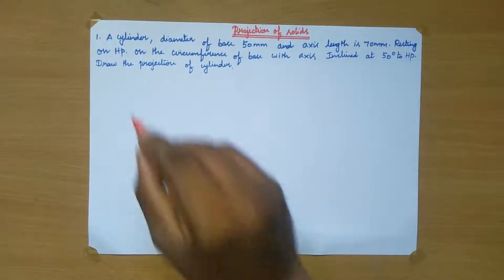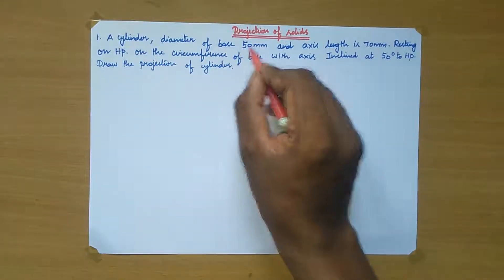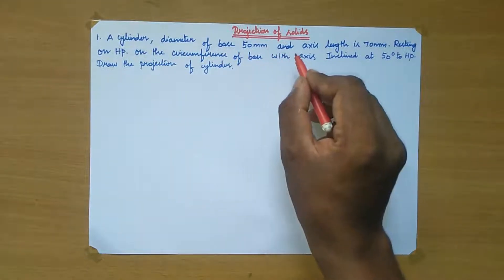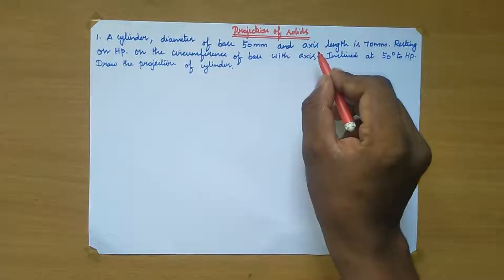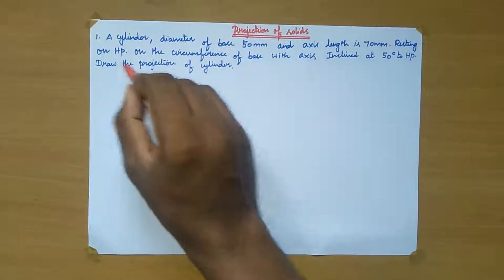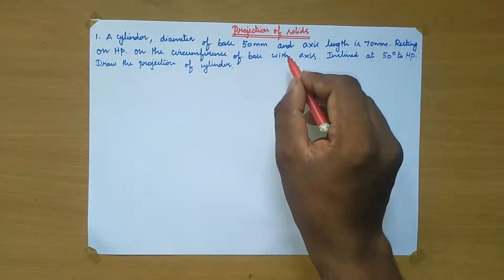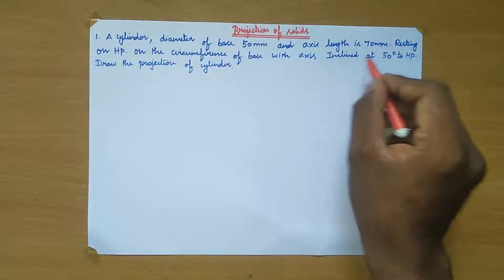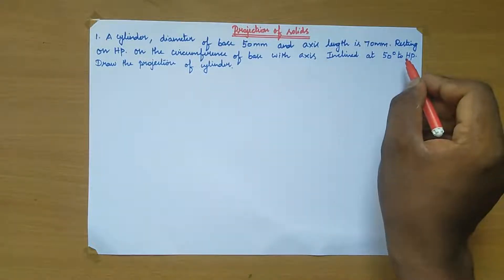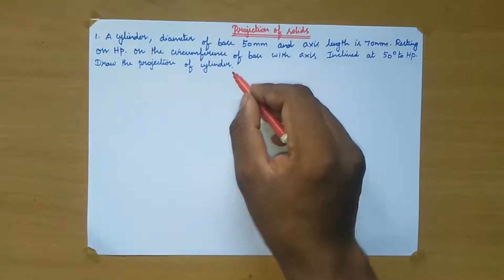So first, read the question: a cylinder with diameter of base 50 mm and axis length 70 mm, resting on HP on the circumference of base, with axis inclined at 50 degrees to HP. Draw the projection of the cylinder.